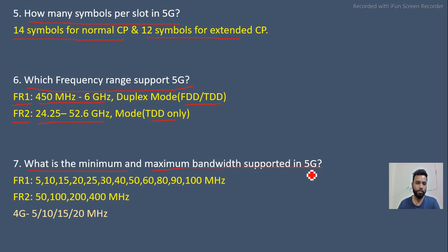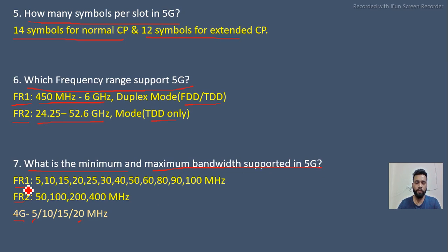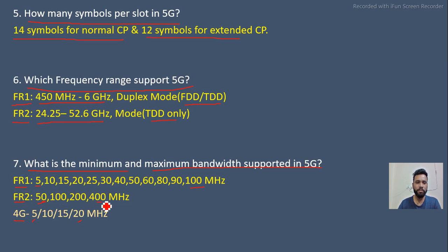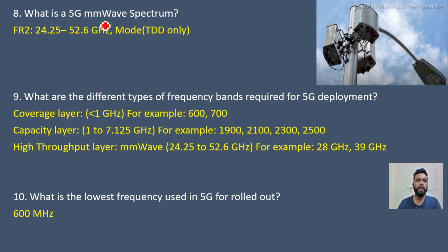Next question: what is the minimum and maximum bandwidth supported in 5G? In 4G, bandwidths were 5, 10, 15, and 20 MHz (minimum 5, maximum 20). In 5G it depends on the frequency range. For FR1, bandwidths are 5, 10, 15, 20, 25, 30, 40, 50, 60, 80, 90, and 100 MHz — minimum 5, maximum 100 MHz. For FR2, minimum is 50 MHz and maximum is 400 MHz.